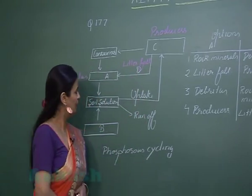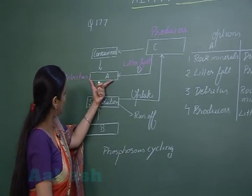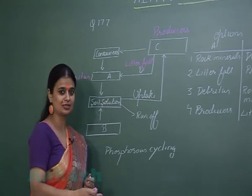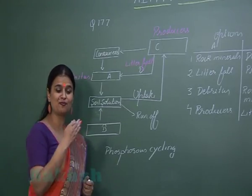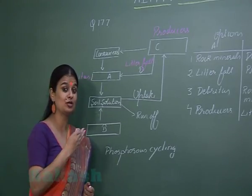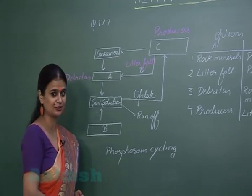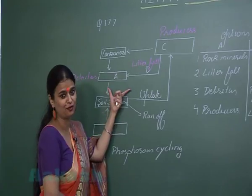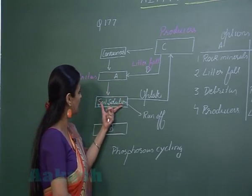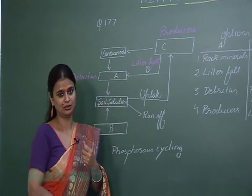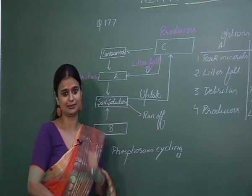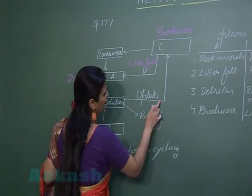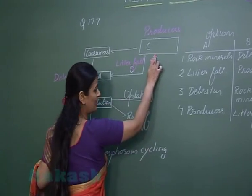From the plants, litter fall — that is leaf fall — also represents detritus. On the detritus, there is action of microbes. Microbes cause the breakdown of detritus, and after the breakdown, phosphorus is added back into the soil solution. So this uptake and addition of phosphorus in the soil solution forms the cycle.